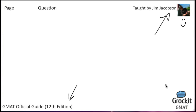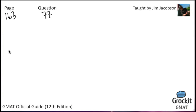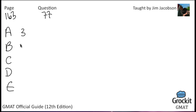Last time we left off with question number 77 on page 163. The answer choices are 3, 4, 6, 7, and 8. The question reads: there are four more women than men on Centerville's Board of Education. If there are ten members on the board, how many are women?